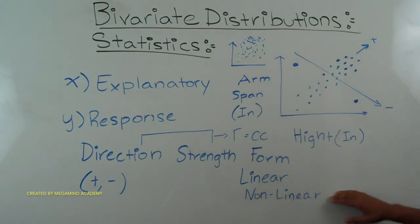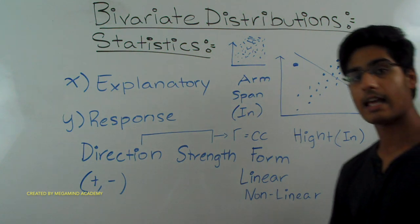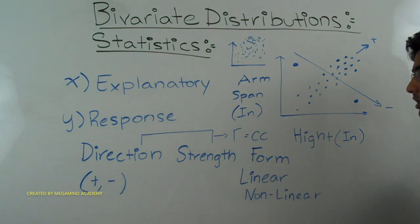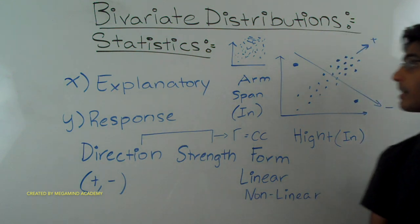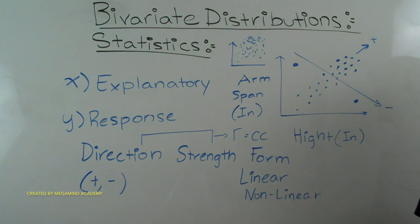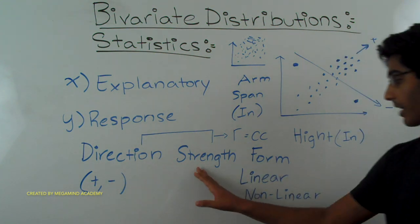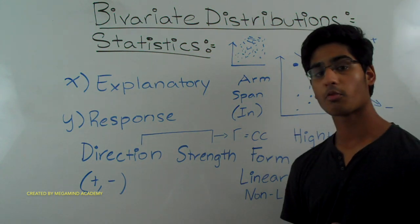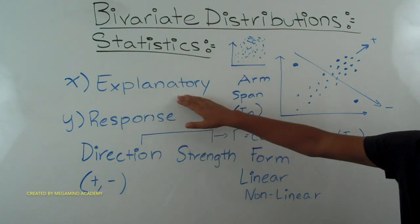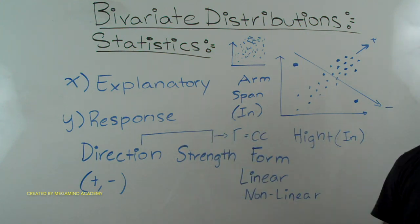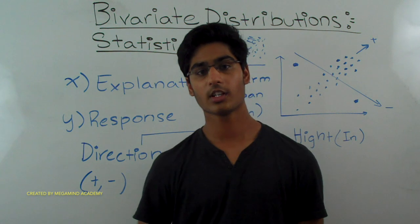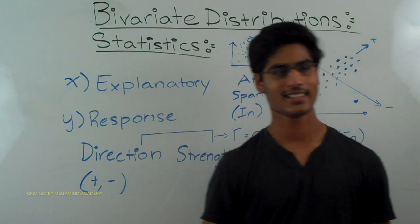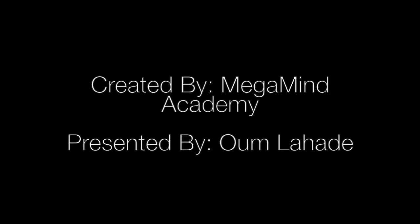We can figure out the form by looking at something called a residual plot, which is covered in a different video called residuals and residual plots. So the three things to remember when describing bivariate distributions are direction, strength, and form. We also have to remember that we have two variables — the explanatory variable and the response variable. Today we learned about bivariate distributions in statistics. Thank you for watching, and we'll see you next time.